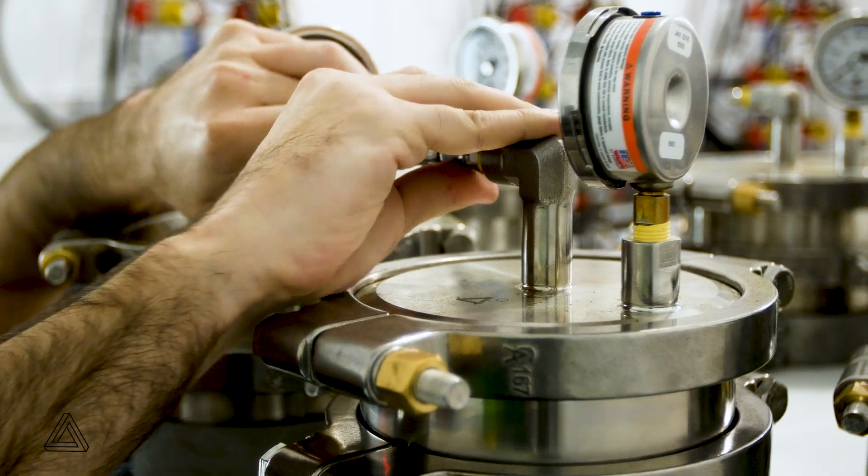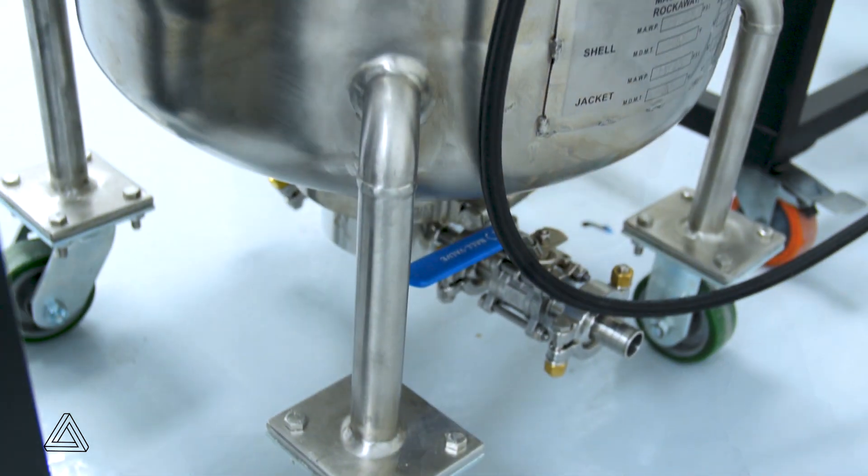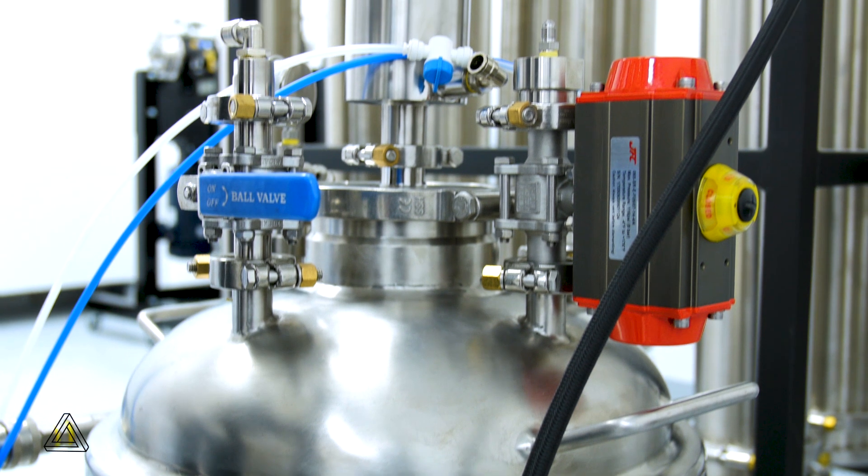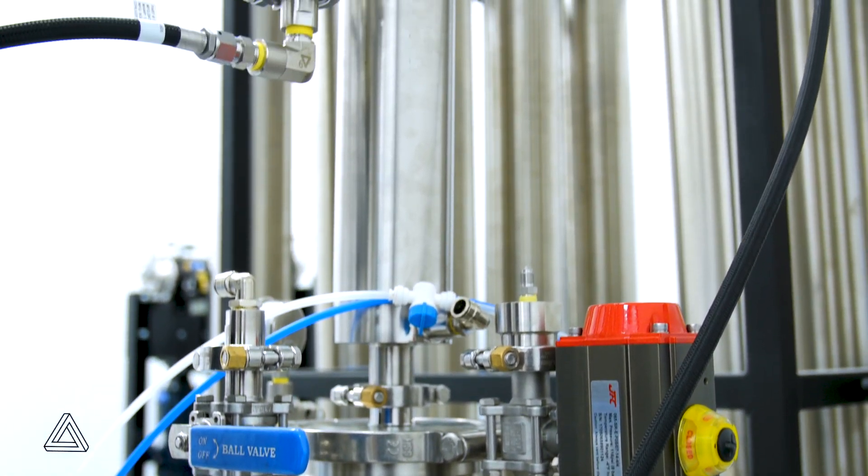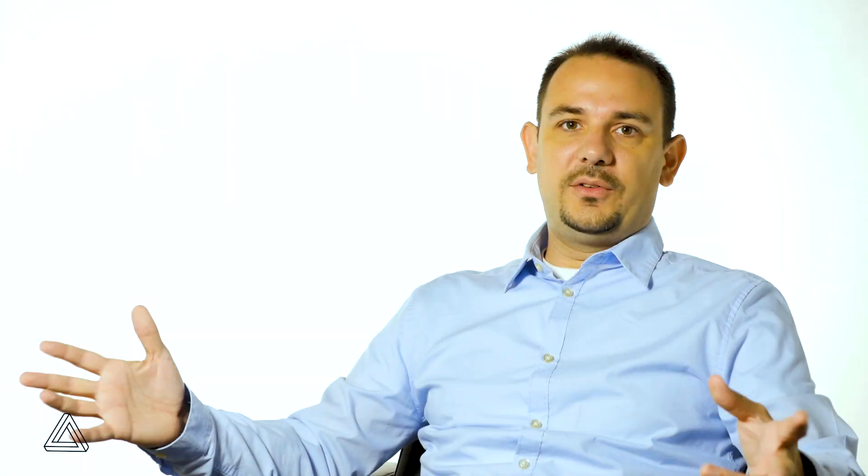The gas tank, the extraction tubes, and the collection pots are all jacketed so that you can run heat transfer fluid or cooling fluid through the outside of the tank. The tanks have an outer layer of fiberglass on them so that when you are heating or cooling, you don't lose that cooling capacity to just the atmosphere.